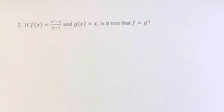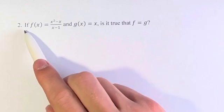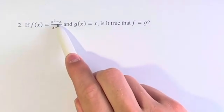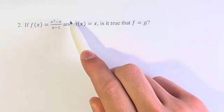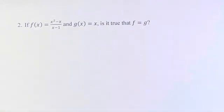Hello and welcome back to our video. In this problem we're asked if f(x) is equal to x squared minus x over x minus 1, and g(x) is equal to x. Is it true that f is equal to g?